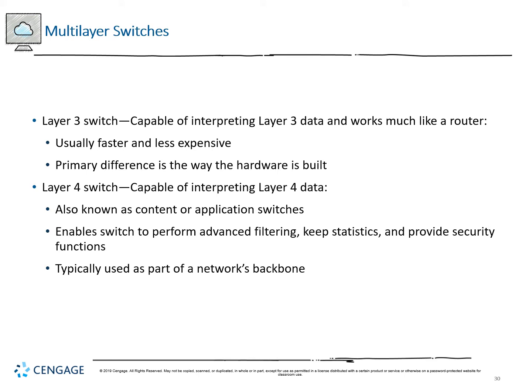A Layer 3 switch is a multi-layer switch capable of interpreting Layer 3 data, working much like a router — the hardware construction is really the primary difference. These switches handle routing functions but don't have the same physical size or port connectivity as a full router, and are usually less expensive, though they can't handle the same level of complexity. Layer 4 switches, known as application switches or content switches, can perform filtering, keep statistics, and provide security functions. They're usually used as part of an internal network's backbone, structured into the MDF of a large infrastructure building.